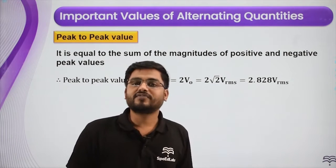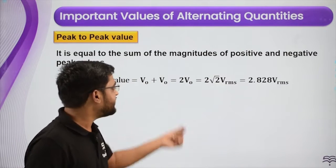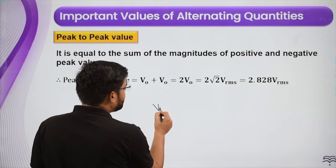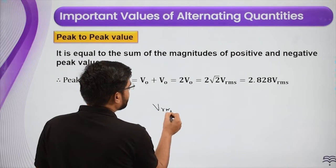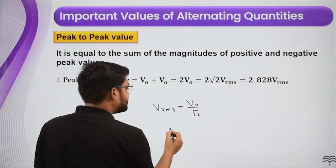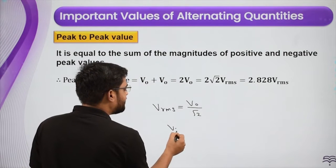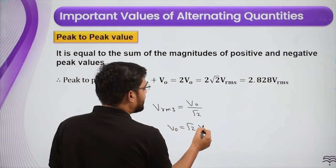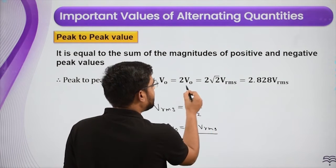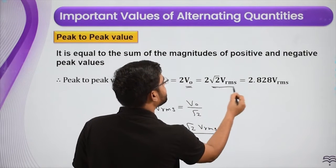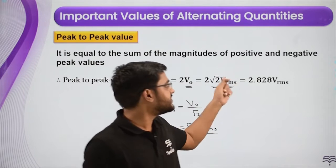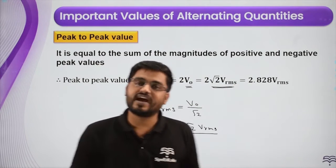Peak-to-peak value is twice the peak value. We have already discussed that RMS value is nothing but peak value divided by root two, so peak value is root two times V_RMS. Substituting V₀ as root two times V_RMS, we get peak-to-peak value as 2.828 times V_RMS.